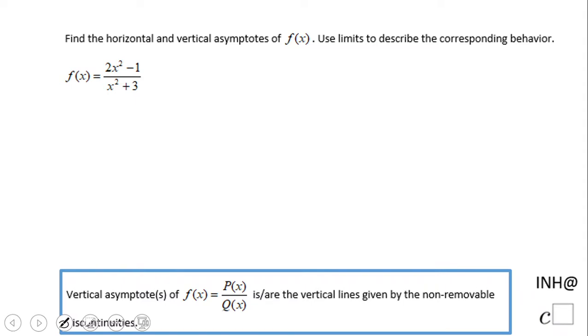Welcome on I need help at c square. In this example we're going to look at horizontal and vertical asymptotes and use limits to describe the behavior of this rational function.